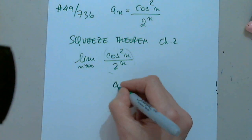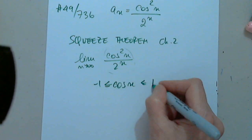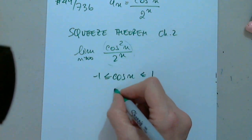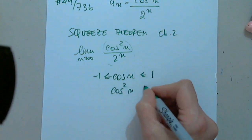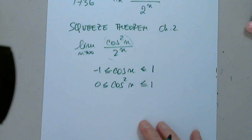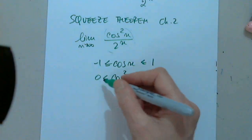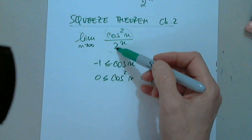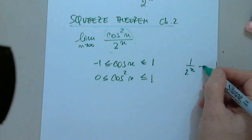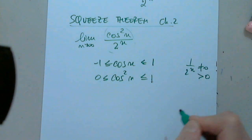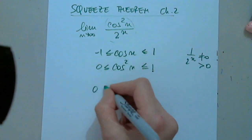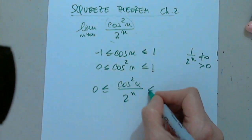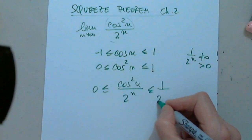We always remember that cosine in general is a number between negative 1 and 1 — it's a bounded function. But we don't have cosine; we have cosine squared. So cosine squared n has to be a number between 0 and 1. I'm going to multiply all three sides, based on the squeeze theorem, by 1 over 2 to the n. Since 1 over 2 to the n is always positive and never zero, the left side is 0, the middle is cosine squared n over 2 to the n, and the right side is 1 over 2 to the n.